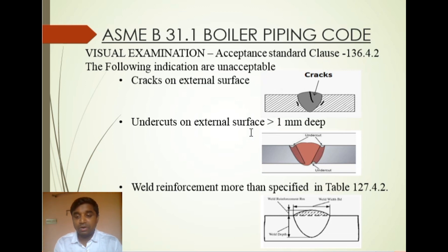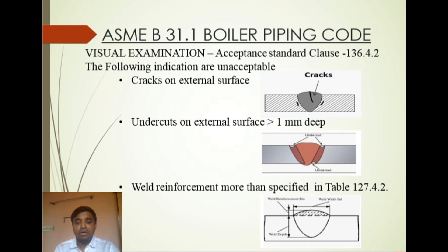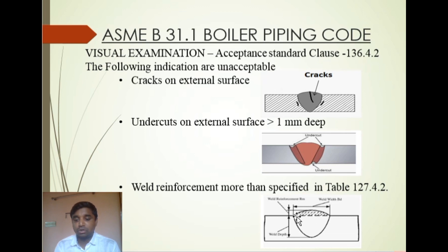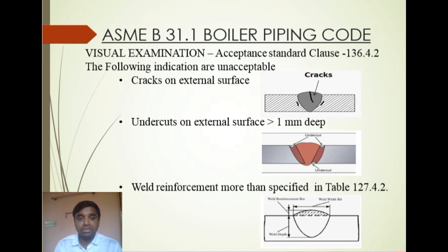Third is weld reinforcement more than specified in table 127.4.2 of ASME B31.1. Weld reinforcement is the distance from the weld face to the top of the weld and the parent metal — this distance is called weld reinforcement.